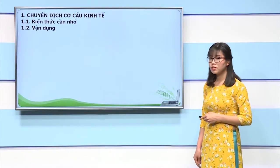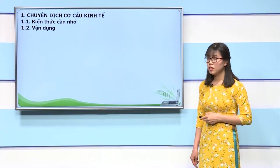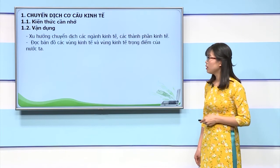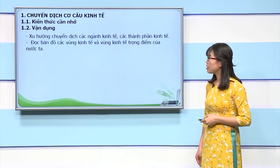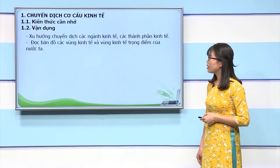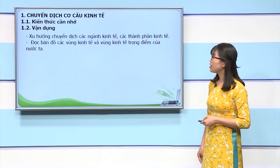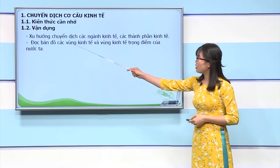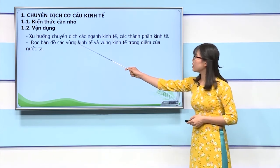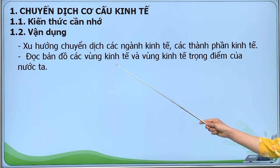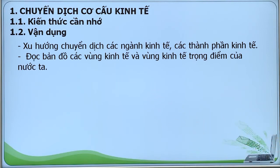Để củng cố cho phần kiến thức vừa tóm tắt, chúng ta sẽ trả lời một số câu hỏi trắc nghiệm. Đối với vấn đề chuyển dịch cơ cấu kinh tế thì đề bài thường tập trung vào 2 vấn đề lớn: vấn đề thứ nhất là xu hướng chuyển dịch các ngành kinh tế, các thành phần kinh tế; vấn đề thứ hai là đọc bản đồ các vùng kinh tế và vùng kinh tế trọng điểm của nước ta.